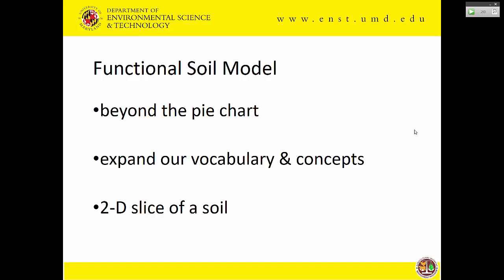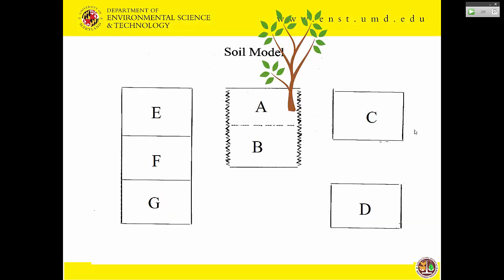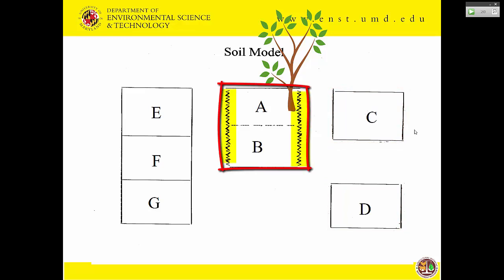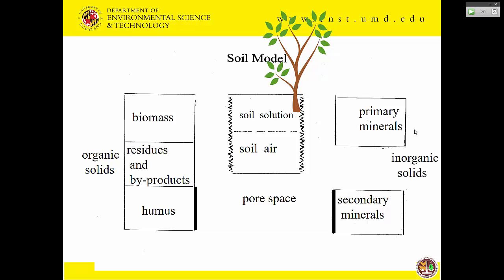Now we'll go beyond the pie chart and look at a functional soil model. The model has compartments E, F, and G on the left side bordering on one another — signifying that sometimes it's hard to tell which one you're in — while C and D on the right are two distinct categories. In the middle are A and B, which go back and forth, and the plant growing in it gets stuff directly from the middle.